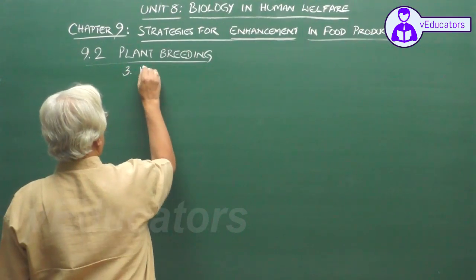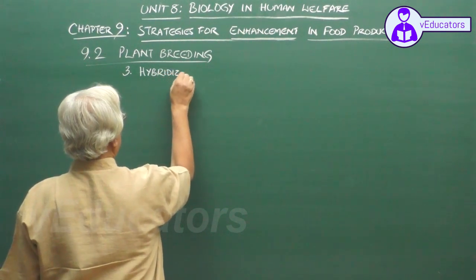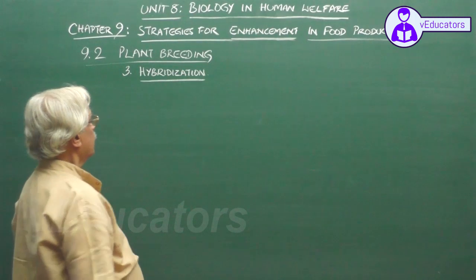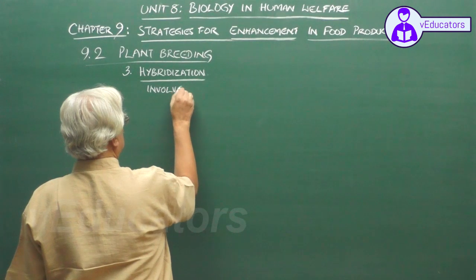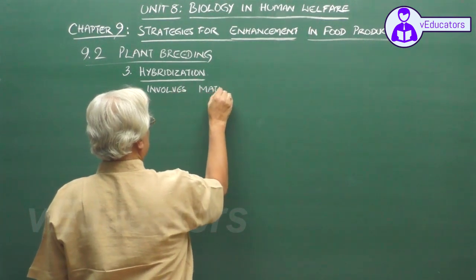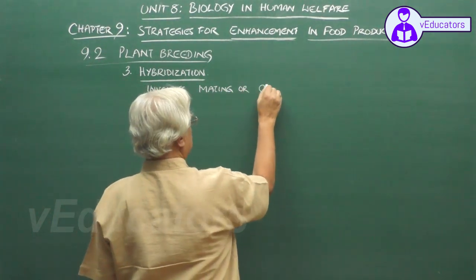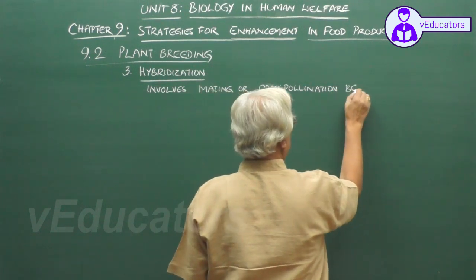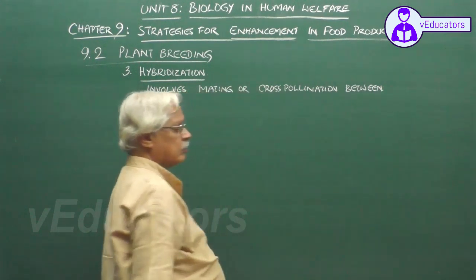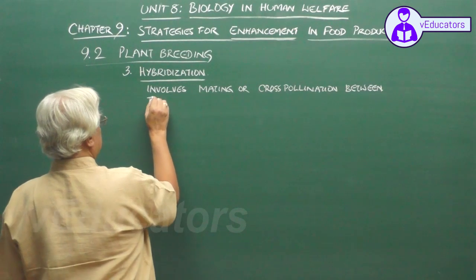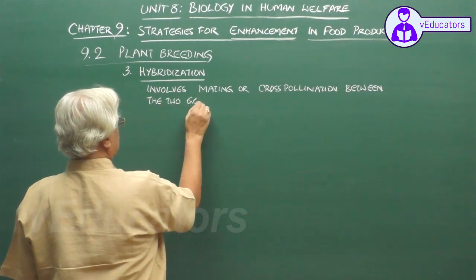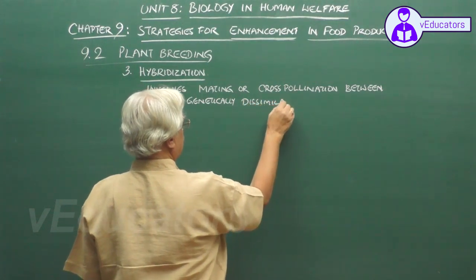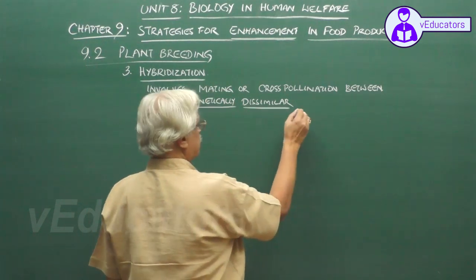The third step is hybridization. Hybridization involves bringing about mating or cross-pollination between two genetically dissimilar parental plants.